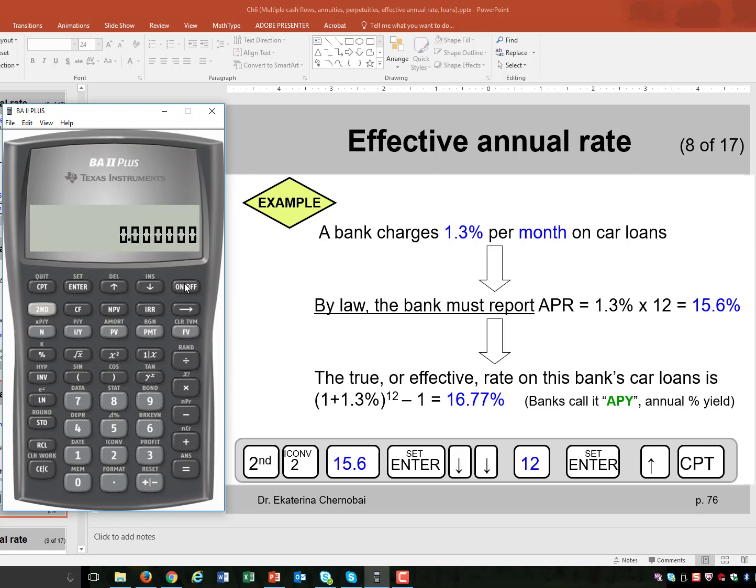And now let's convert the APR of 15.6% into the effective annual rate, which should be always a slightly higher number. Second, 2.